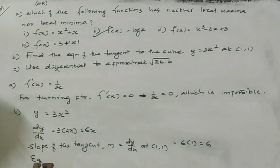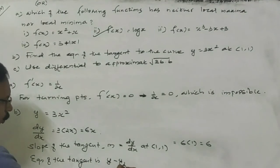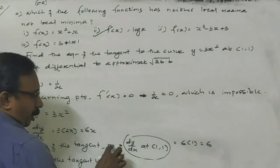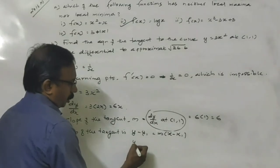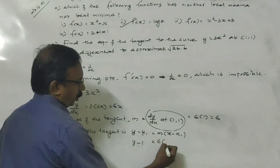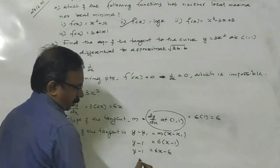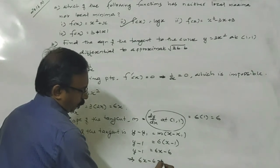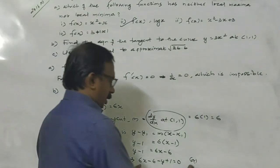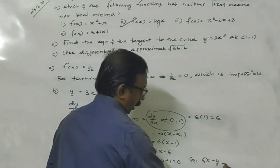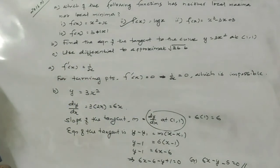Therefore, the equation of the tangent uses the formula: y minus y1 equals m times (x minus x1). Here, y minus 1 equals 6 times (x minus 1). So y minus 1 equals 6x minus 6. Therefore, 6x minus y minus 5 equals 0. This is the equation of the tangent to the curve y equals 3x squared at (1, 1).